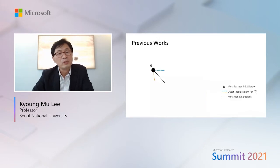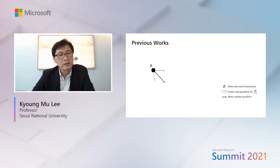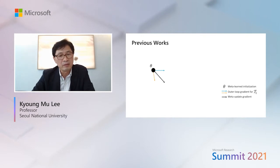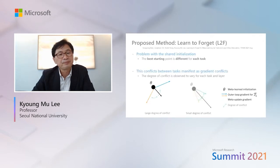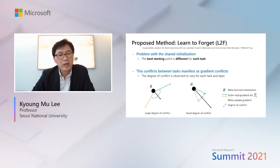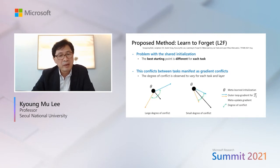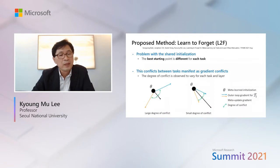As you just saw, the good initialization location is most likely different for each task. Thus, when the gradients are gathered from tasks to update the initialization, the resulting initialization may not be desirable for any of the tasks. In more extreme but possible cases where gradients from different tasks point in opposite directions, the gap between the desirable and resulting initialization location becomes large. We name this gap as gradient conflict.